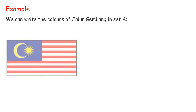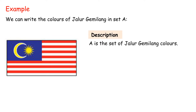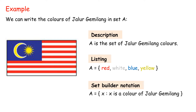Example: we can write the colors of the Jalur Gemilang flag in Set A. Description: A is the set of Jalur Gemilang colors. Listing: Set A can be represented using set notation — A equals {red, white, blue, yellow}. Each element is separated by a comma. Each object in the set is known as an element. Set-Builder notation: A = {x | x is a color of the Jalur Gemilang}.